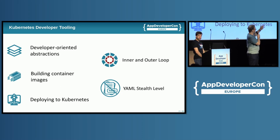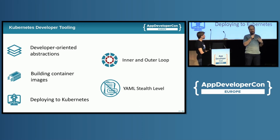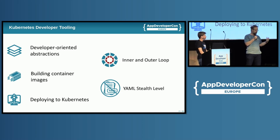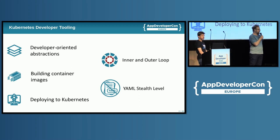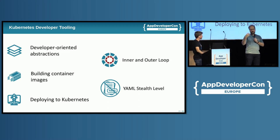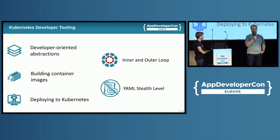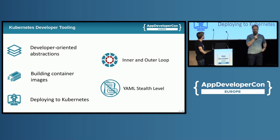Daniel just talked a lot about the inner and outer loop, which is a very important concept for developers. As a developer I really want to live in the inner loop — I want quick feedback. I don't want to make a change, push it to Git, and just check what my code has done. I want to stay local. The outer loop is how you get all this stuff into production and do the big test cycles — end-to-end testing and so on.